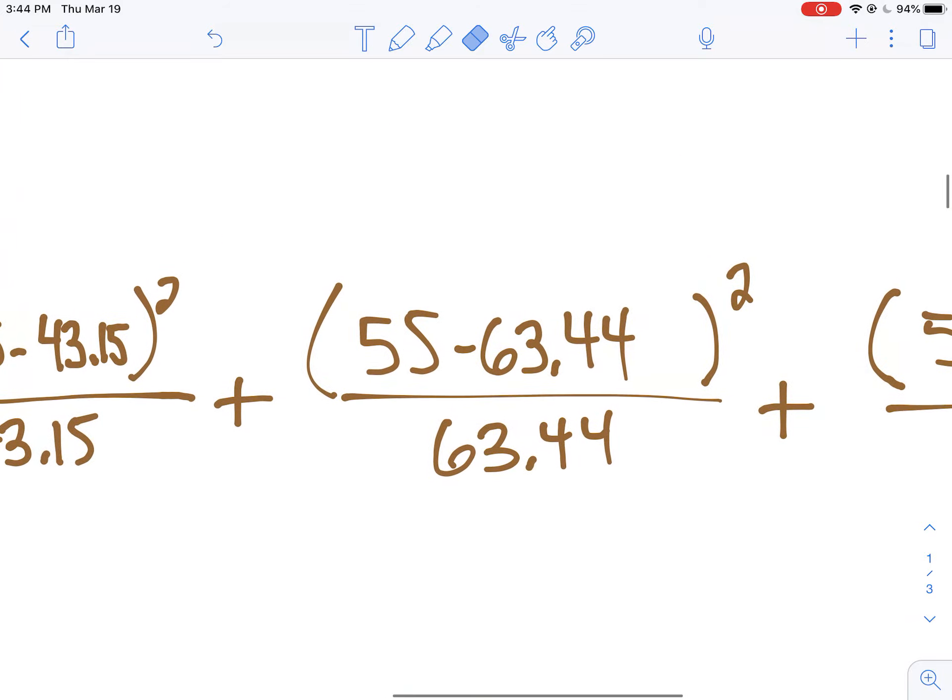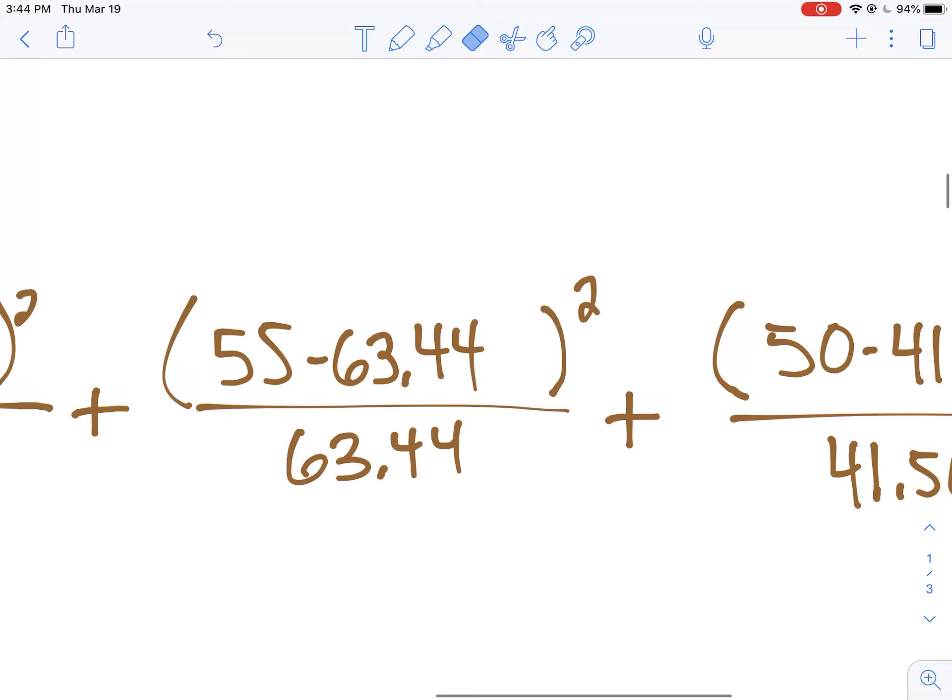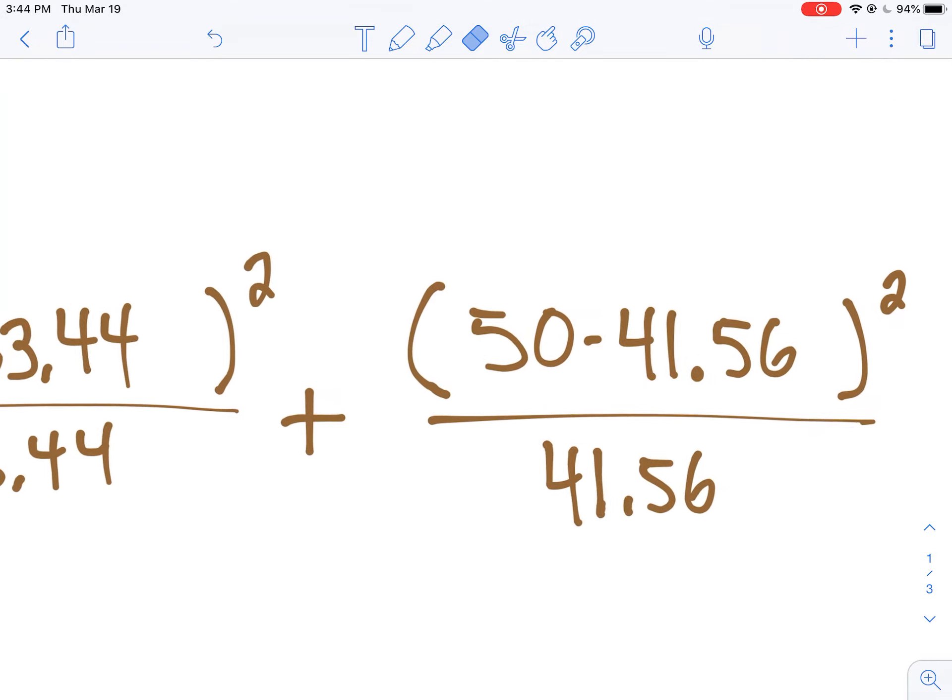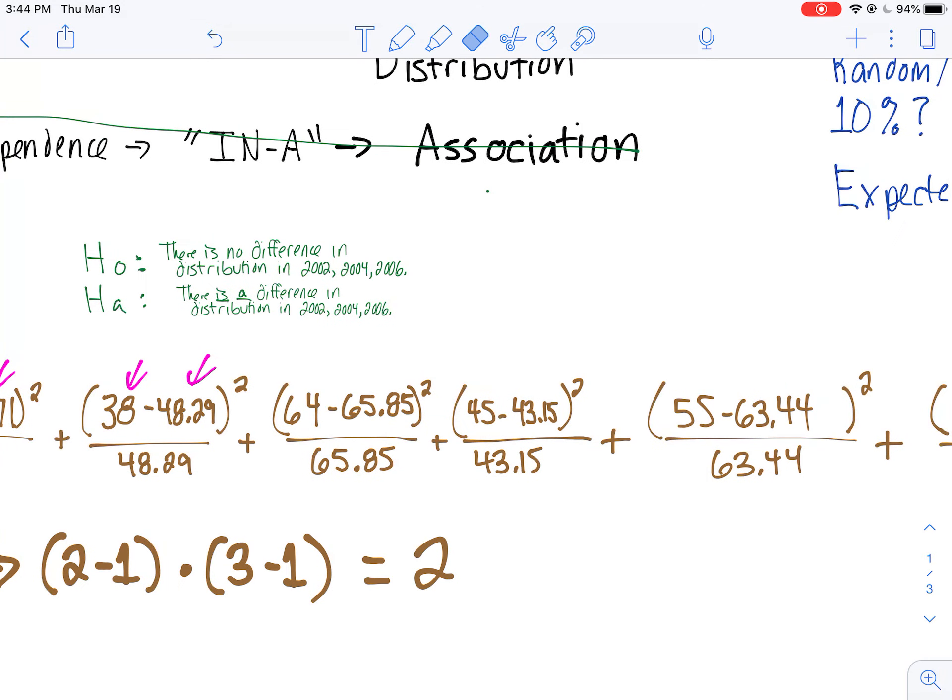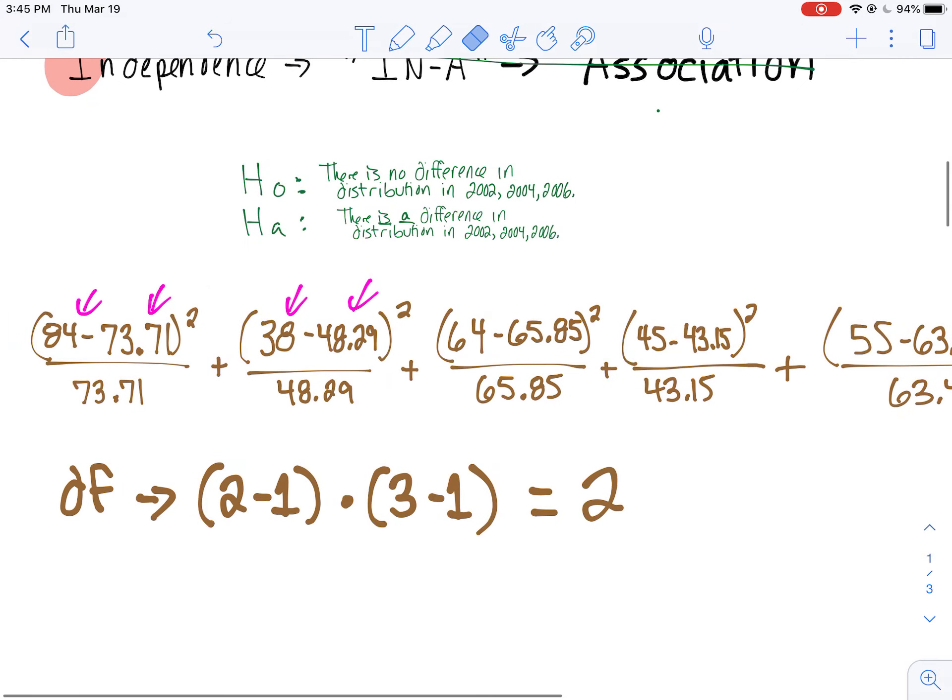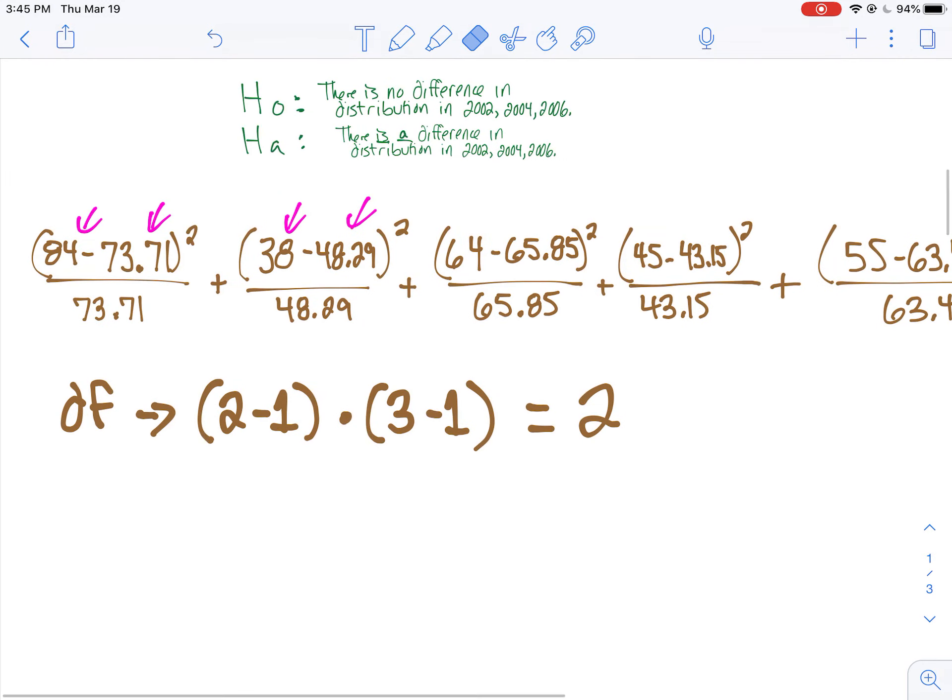We saw 55 and we expected 63.44. Here we saw 50 and we expected 41.56. Those are some big differences. But what we're testing to see is if it's really statistically significant. I got my degrees of freedom here. There are a number of ways I can figure out my p-value now.